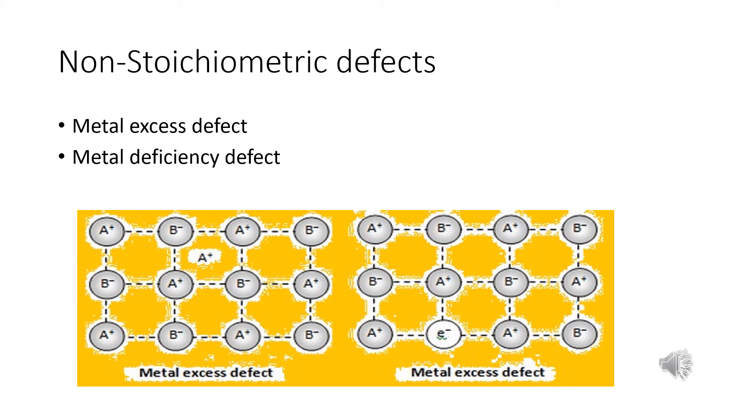In crystals of FeO, ferric oxide, some Fe2+ cations are missing and the loss of positive charge is made by the presence of required number of Fe3+ ions.